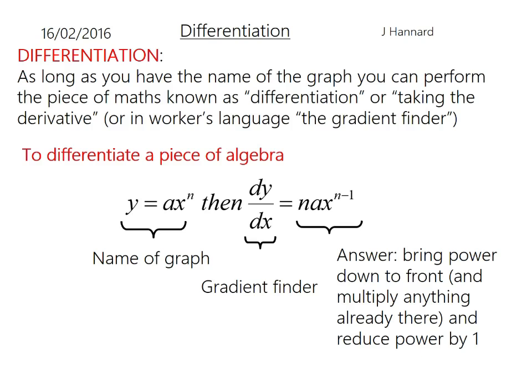So to differentiate a piece of algebra when y equals ax to the n then dy by dx equals nax to the n minus 1. So this is the name of your graph here so it could be y equals x squared, y equals 3x squared, anything. This is what we call the gradient finder. It is the rate of change of y over the rate of change of x. dy by dx, do left do right is the way I like to think of it. And that equals power to the front not one off the power. So if that was a 3 up there I'd bring that to the front it would be 3ax to the 2 because I bring the power to the front and knock one off the power.